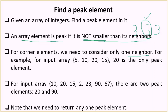For example, we have this array. For 5, we will only check the right neighbor, which is 10. And for 15, we will only check the left neighbor, which is 20. In both cases, 5 is not a peak element because 10 is greater than 5, and 15 is not a peak element because 20 is greater than 15.